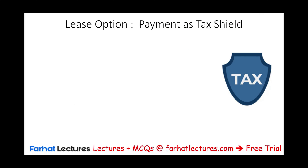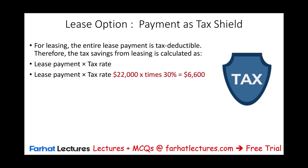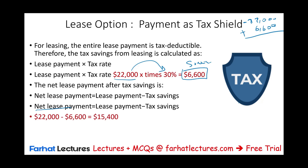Now let's take a look at the leasing option. The leasing option requires payments, but those payments also provide us a tax shield — same concept as the depreciation. It's the lease payment times the tax rate. So every year we're going to pay $22,000; however, multiplied by 30%, that gives us a tax savings of $6,600. We are writing a check to the leasing company for $22,000, but our taxes are being reduced by $6,600. Therefore, the net lease payment after taxes — payment minus tax savings — is $15,400.